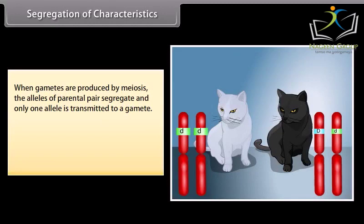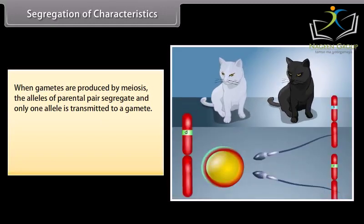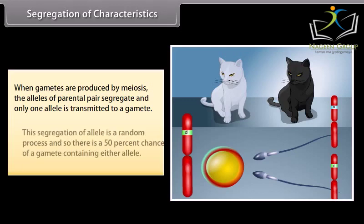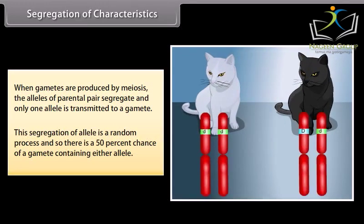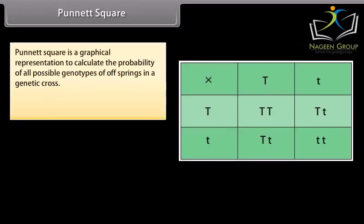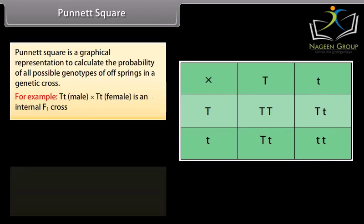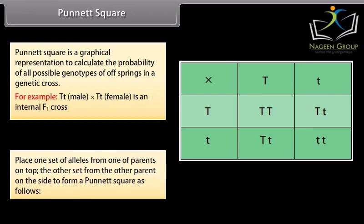Segregation of characteristics. When gametes are produced by meiosis, the alleles of a parental pair segregate and only one allele is transmitted to a gamete. This segregation is a random process, so there is a 50% chance of a gamete containing either allele. Punnett square is a graphical representation used to calculate the probability of all possible genotypes of offspring in a genetic cross. Place one set of alleles from one parent on top and the other set from the other parent on the side to form a Punnett square.